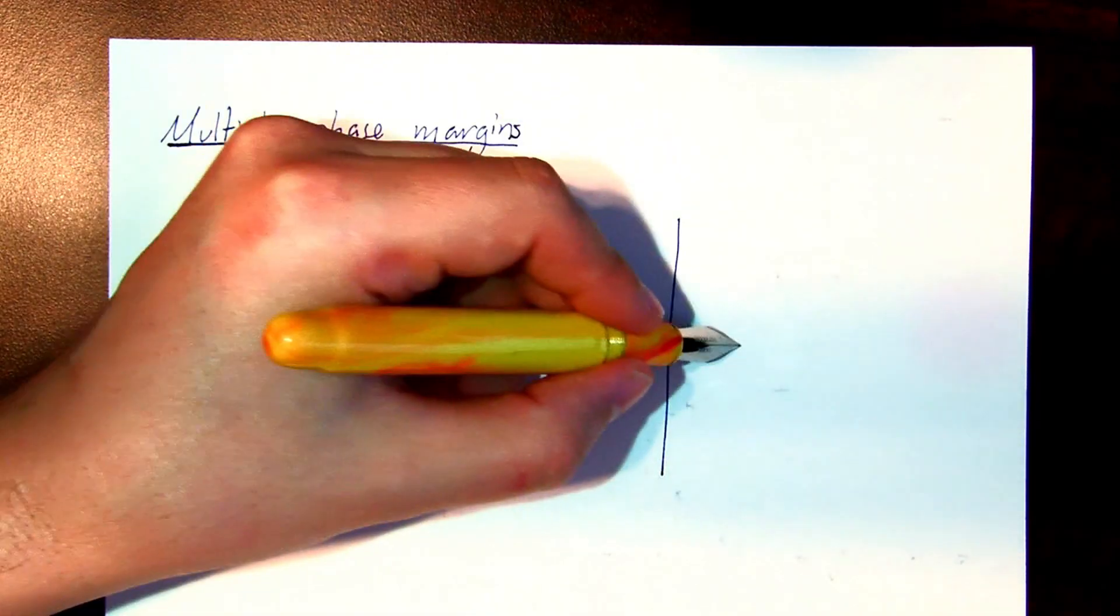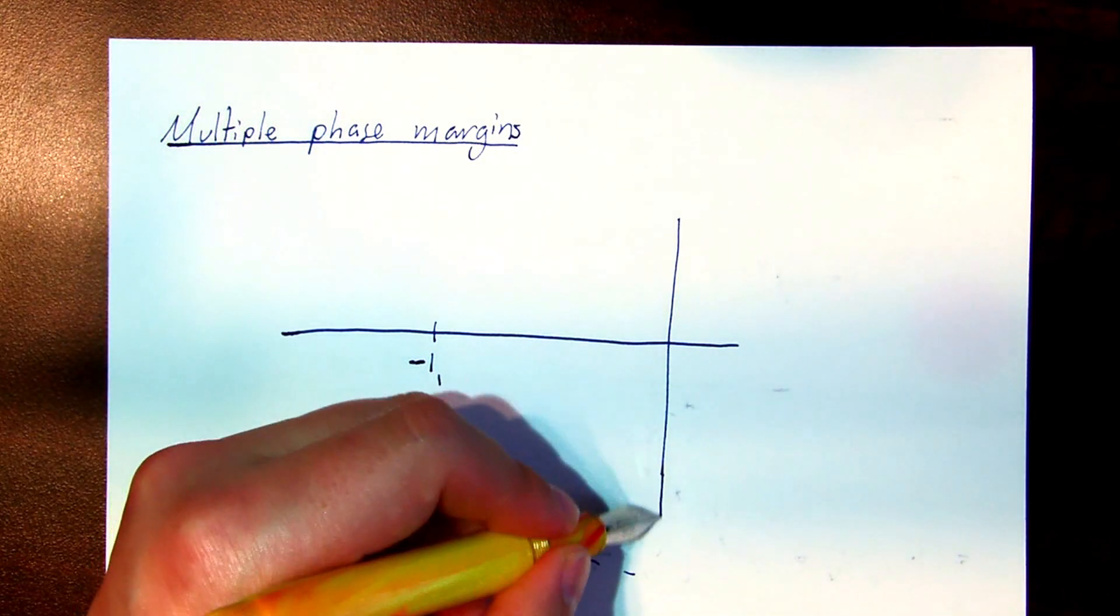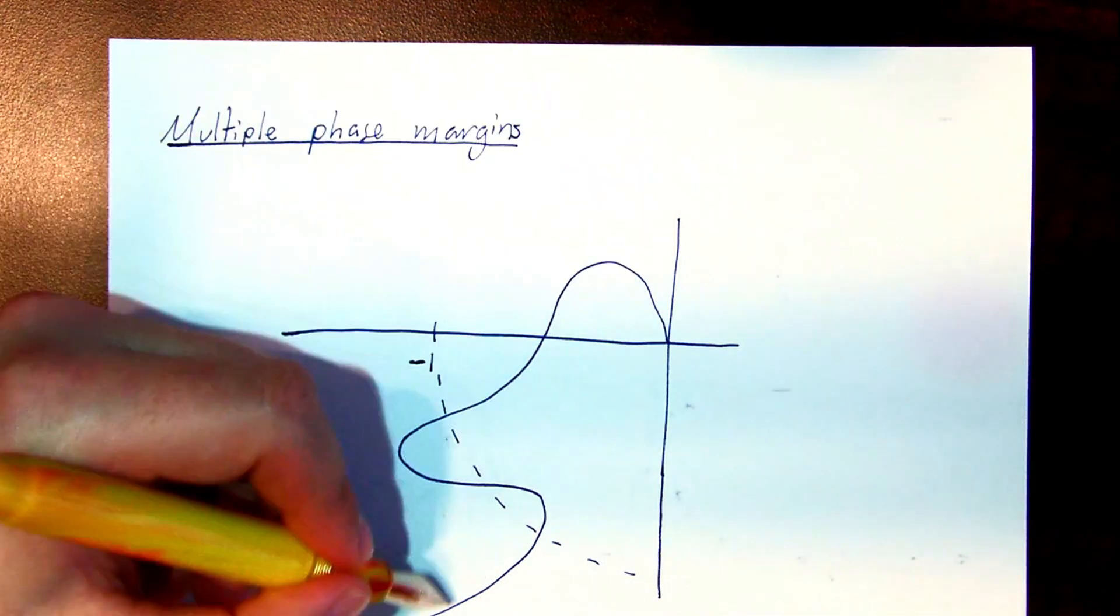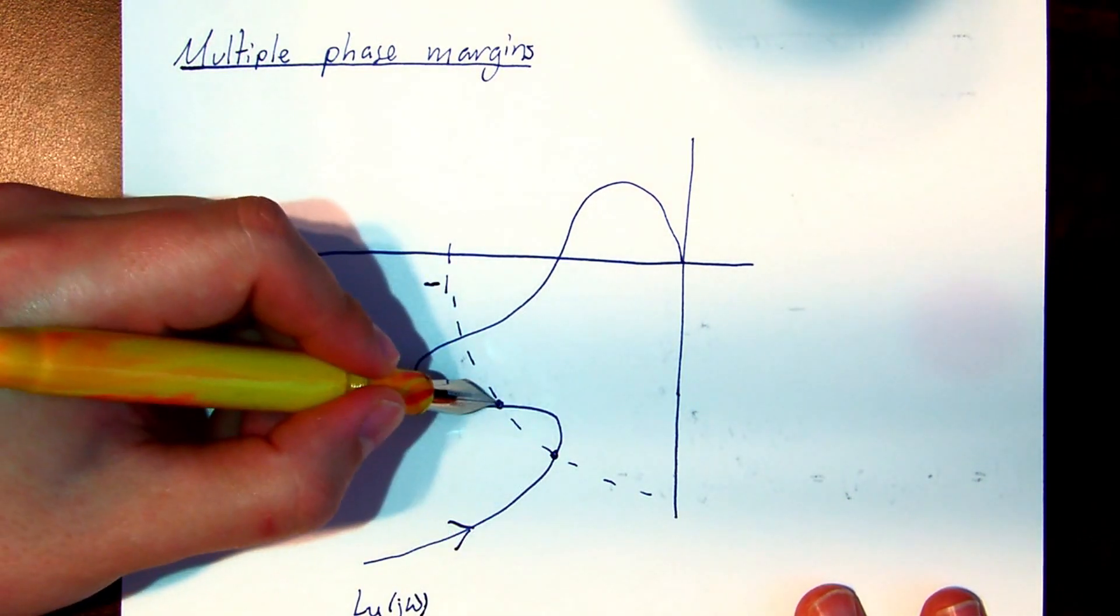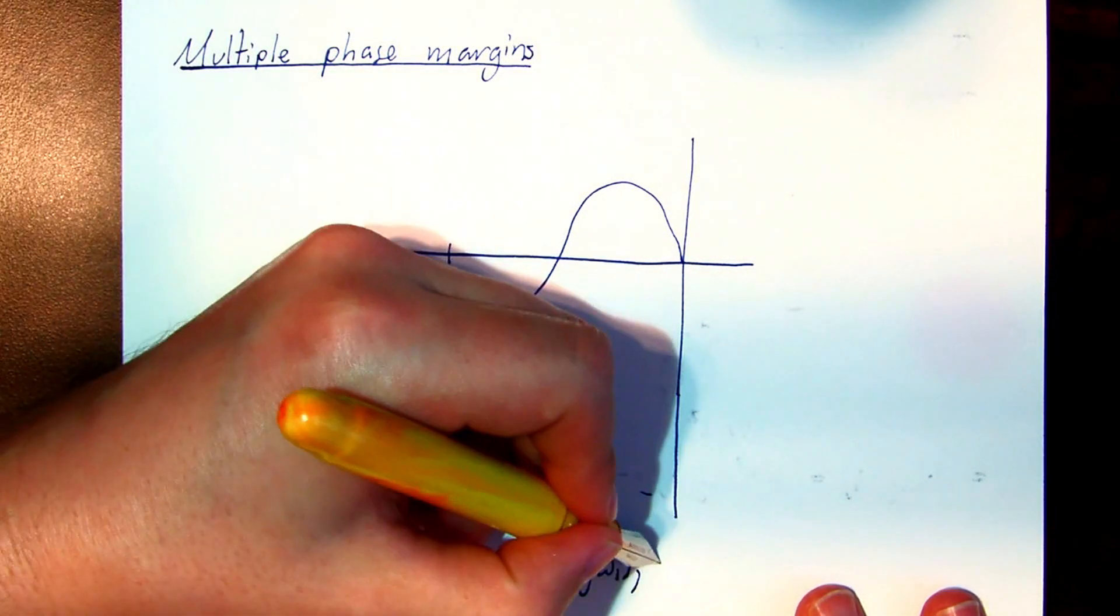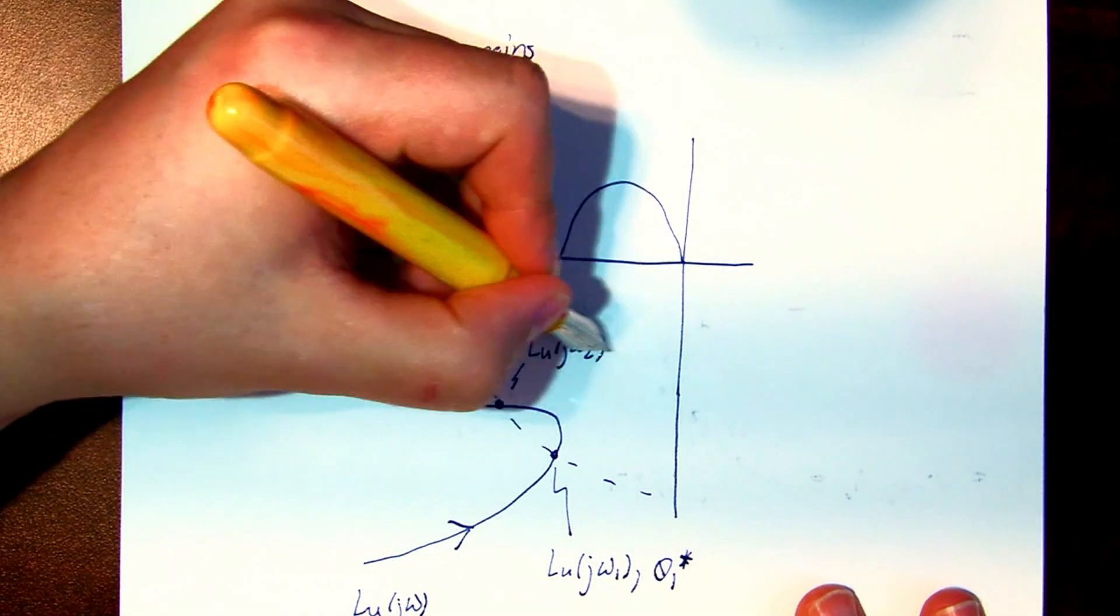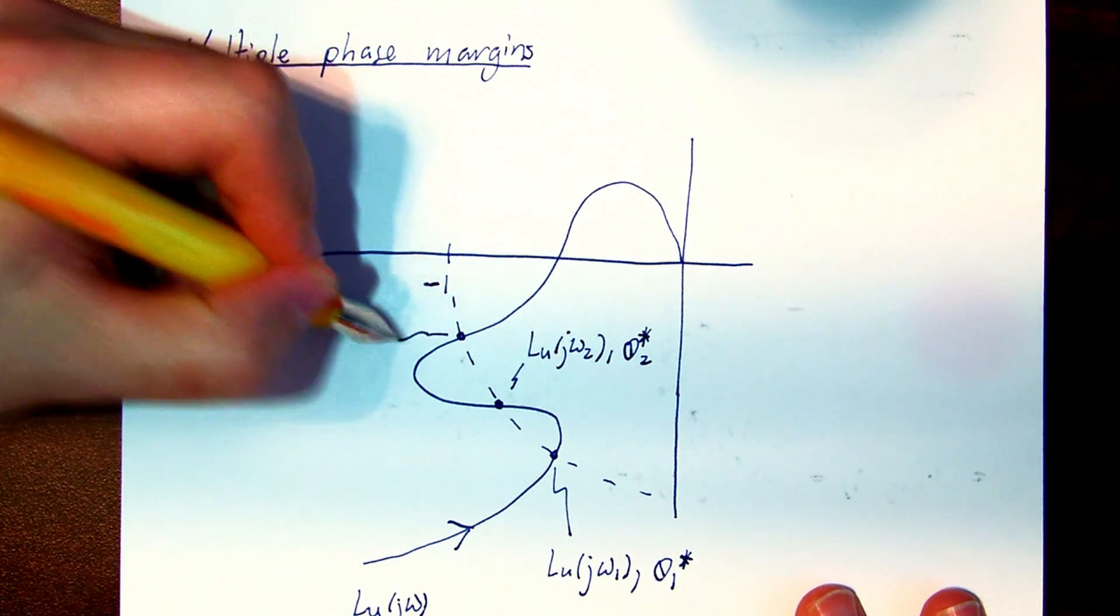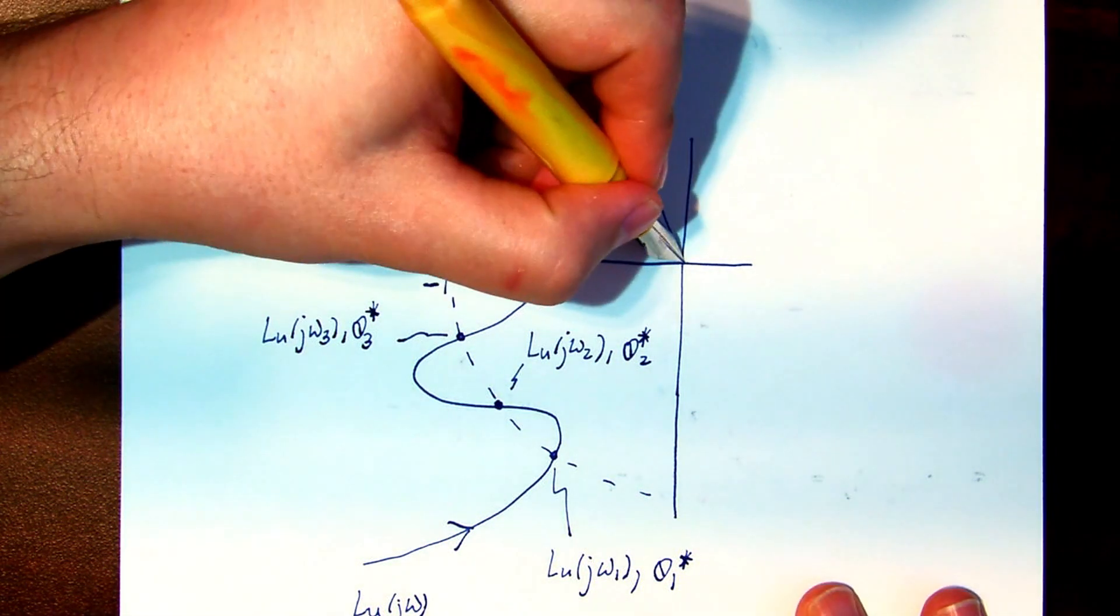And now the case of multiple phase margins. Unit disk. Loop gain crossing the unit disk at 3 points. The lowest frequency will denote omega 1, and it has a phase margin of theta 1 star. The intermediate frequency omega 2, phase margin theta 2 star. And at the highest frequency, theta 3 star.